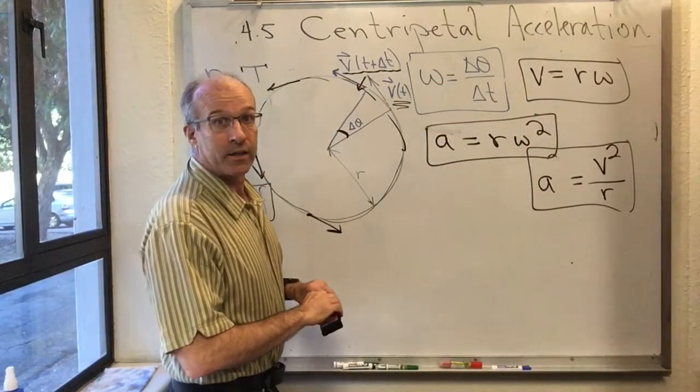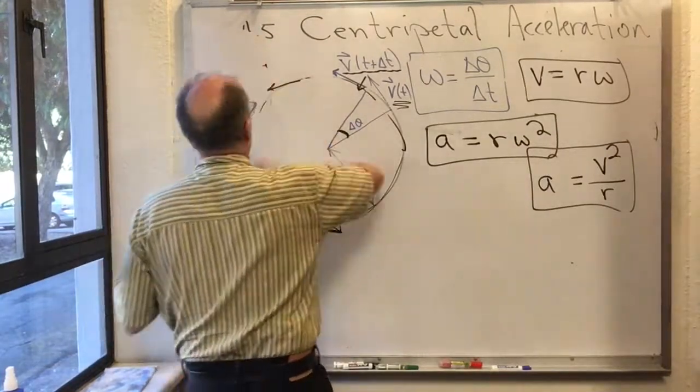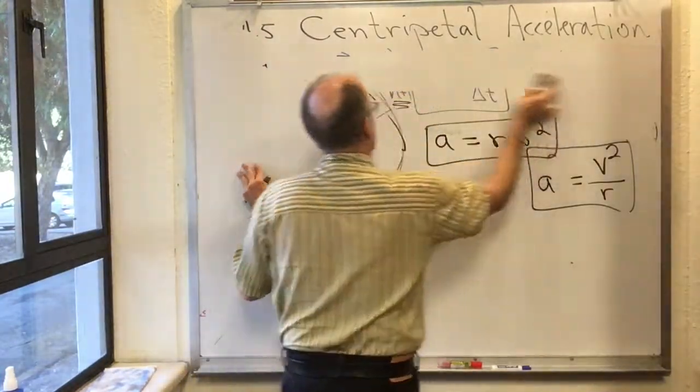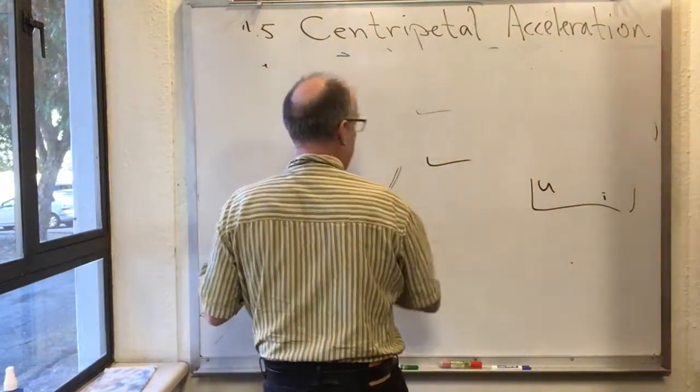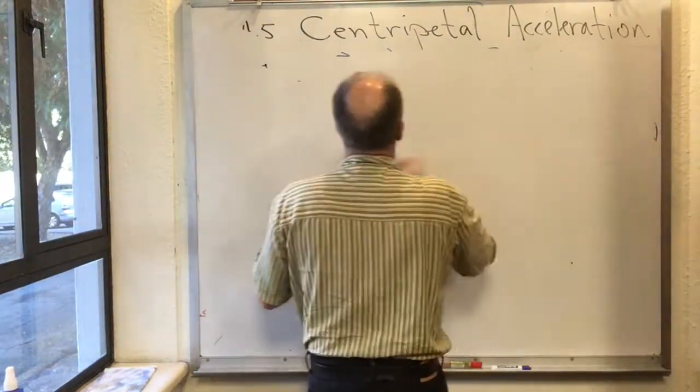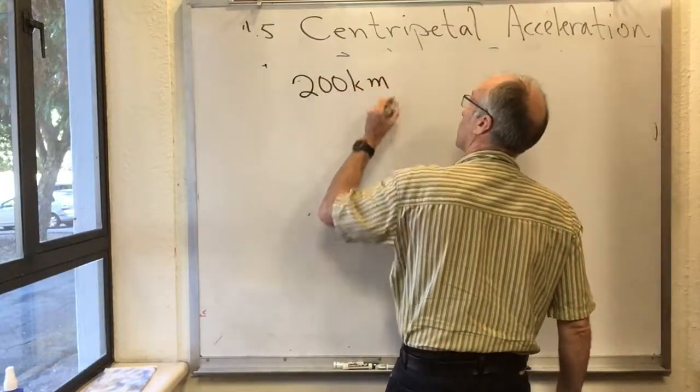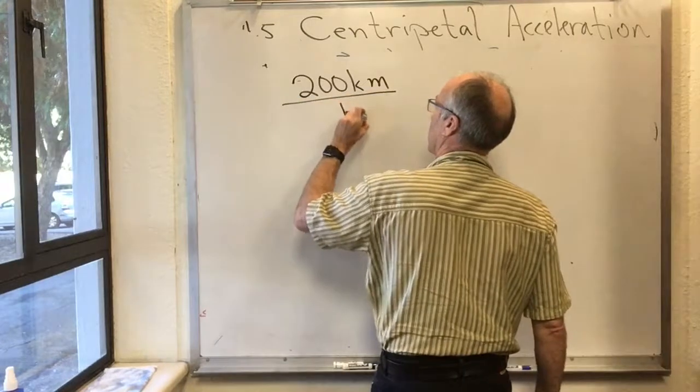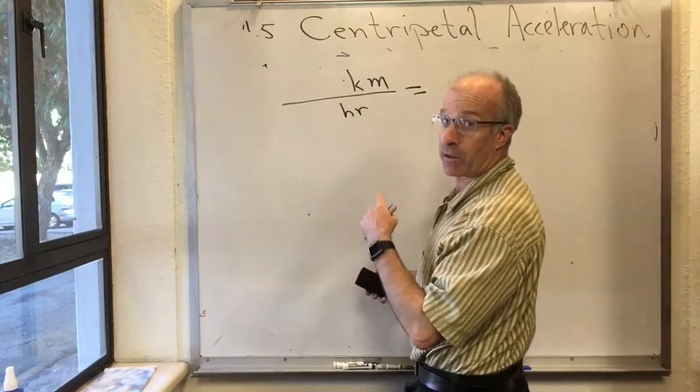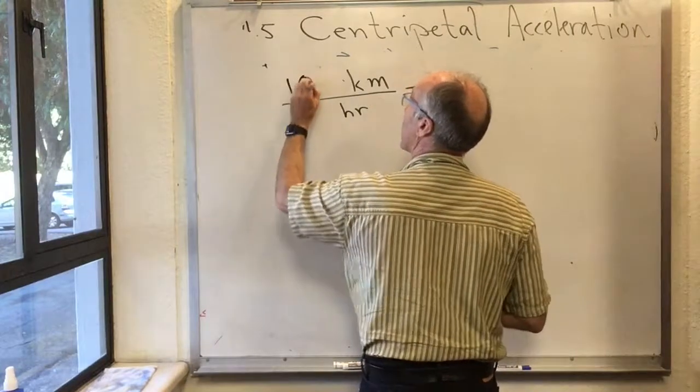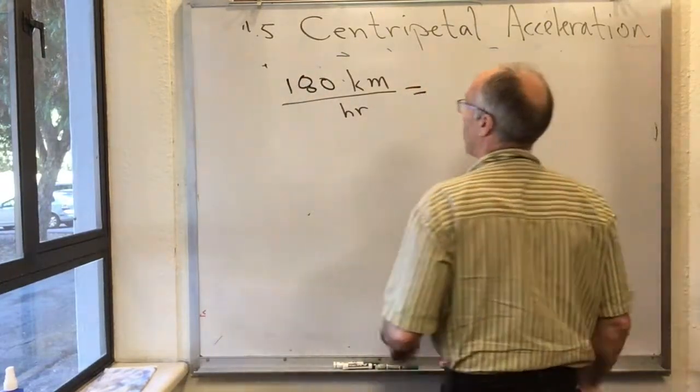Let's do one quick example. So let's suppose you're out on a racetrack. You're out on a racetrack, and you're in a car that can do, let's say, 200 kilometers. You know, I want the units to work out a little bit nicer, because I'm going to have to do a units conversion. So let's make it 180 kilometers an hour. That's still pretty darn fast.